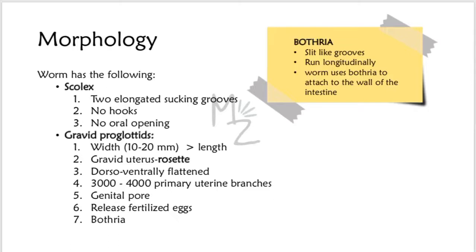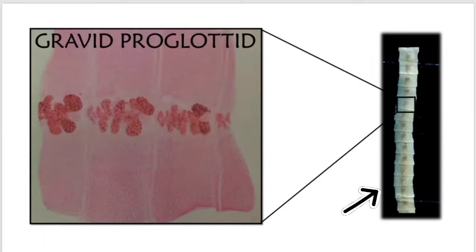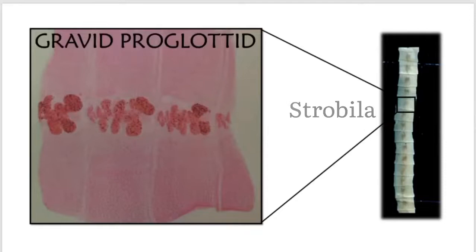Neck: it is a proliferative region, responsible for giving rise to new proglottids. On the right side you can see the gravid proglottids and the different segments of Diphyllobothrium latum. The whole body is called the strobila. I have zoomed into one part showing the gravid proglottid, and inside you can see the rosette uterus.